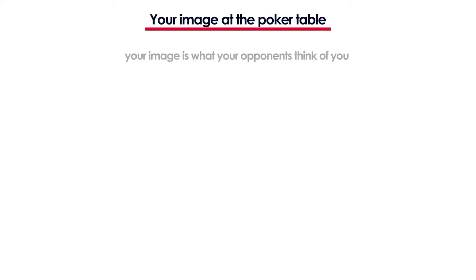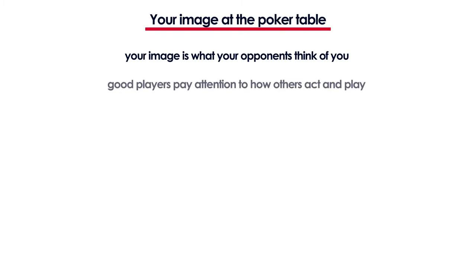Your image at the poker table is basically what your opponents think of you — whether they think you're a nit or a maniac. When you sit at a new table, all the thinking players will start to observe how you act and play and they'll quickly make assumptions about you, which with time they'll adjust. But remember, sometimes the first impression lasts for way too long.